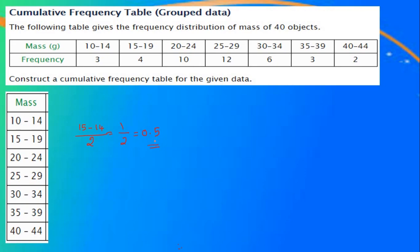What to do with this adjustment factor? We subtract the adjustment factor from the lower limits and add it with the upper limits. So the first class interval can be rewritten as 9.5 to 14.5. We subtract 0.5 from 10 and add it to the upper limit 14. The second class interval becomes 14.5 to 19.5. This converts the non-continuous class intervals to continuous class intervals.